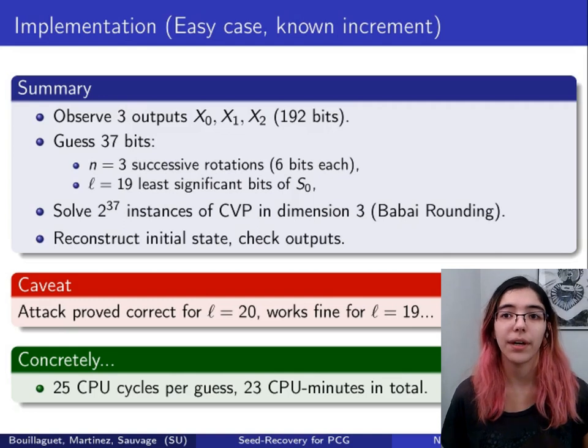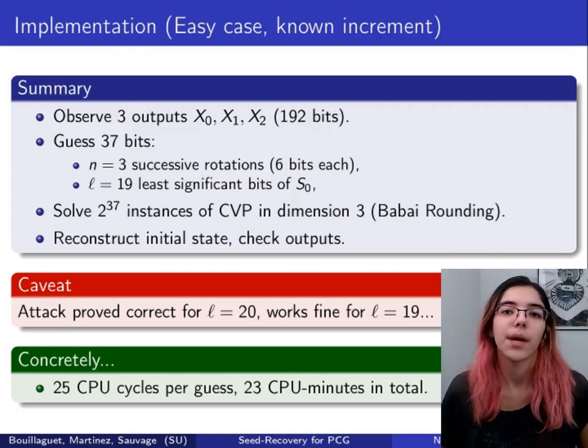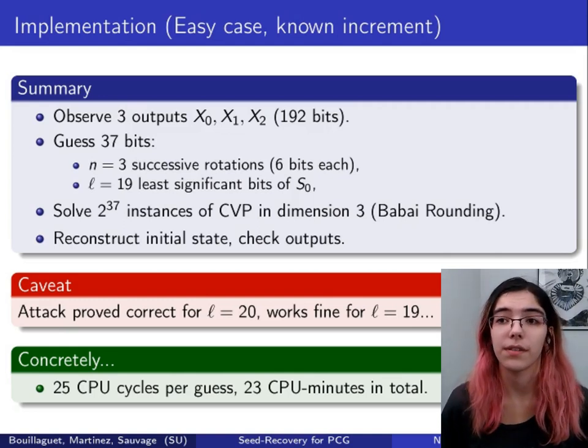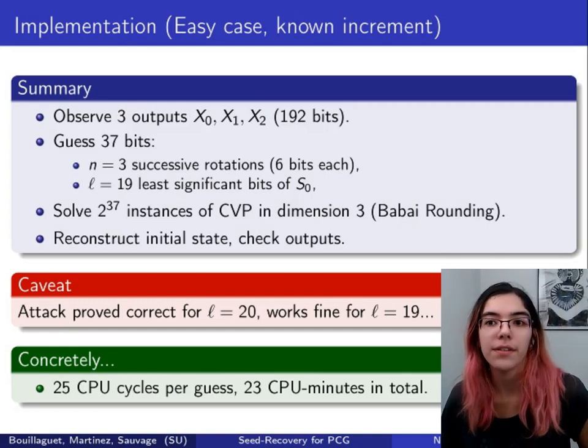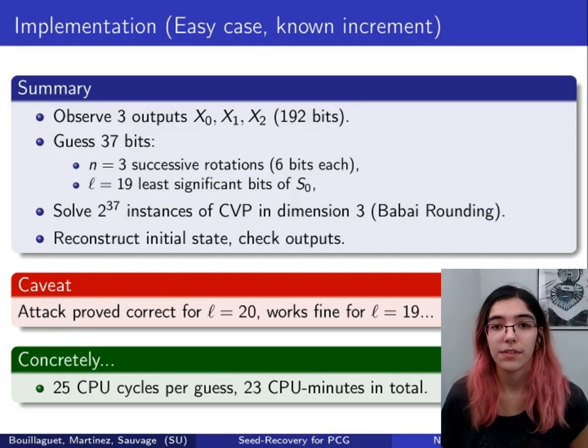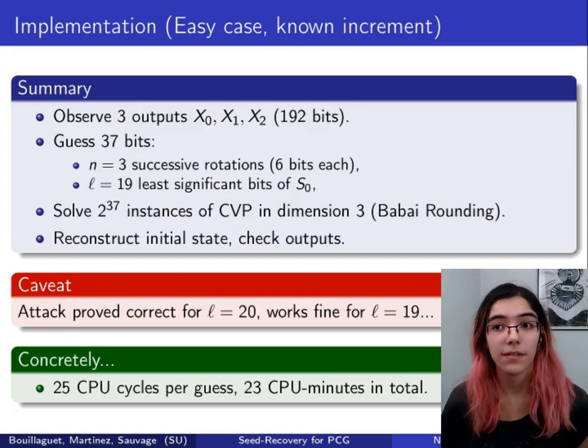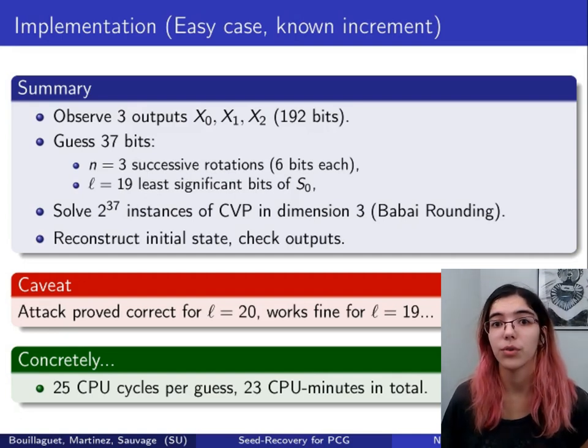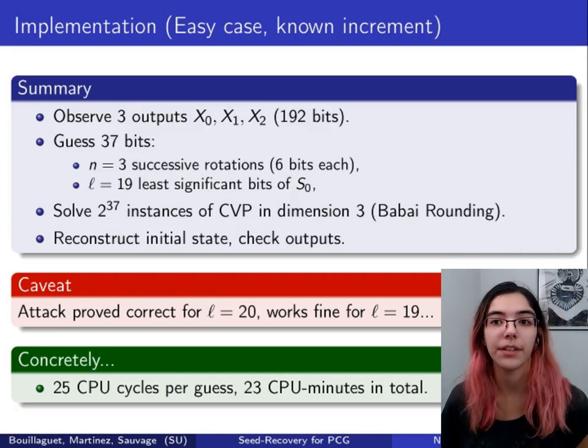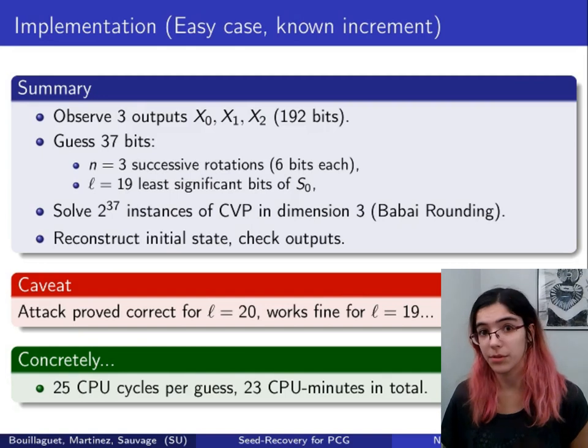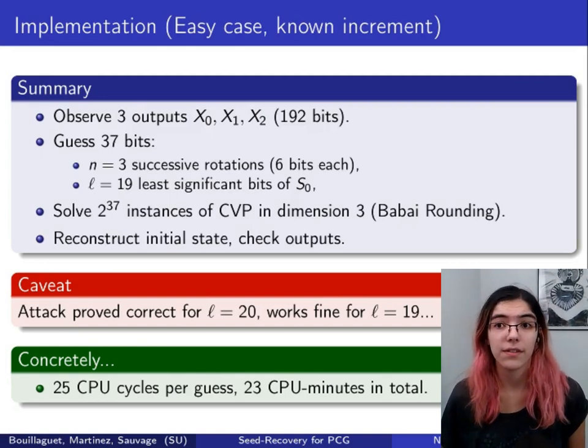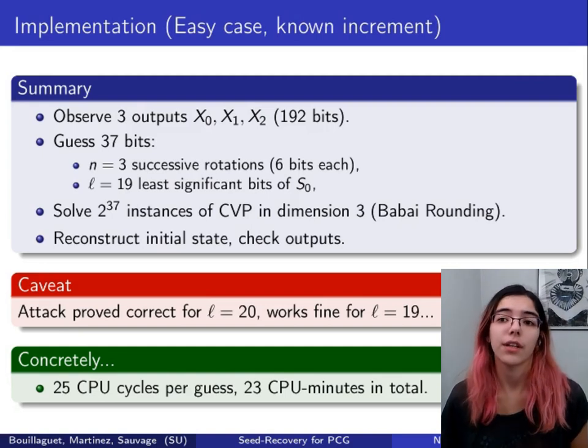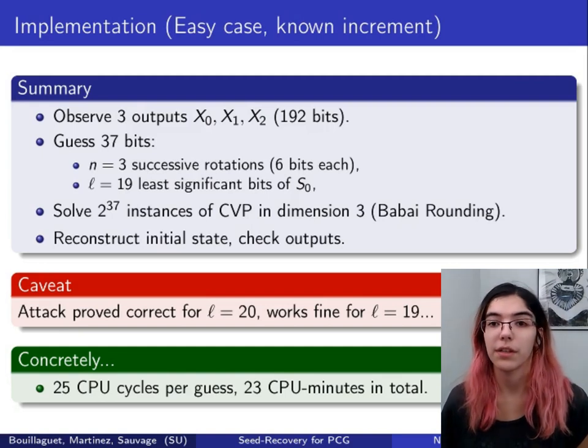To summarize, in the easy case, we take three consecutive outputs, which makes 192 bits. We guess 37 internal state bits. Then for each of the 2^37 possibilities, we solve an instance of CVP in dimension 3. We reconstruct the internal state, and then we check if it produces the expected outputs.